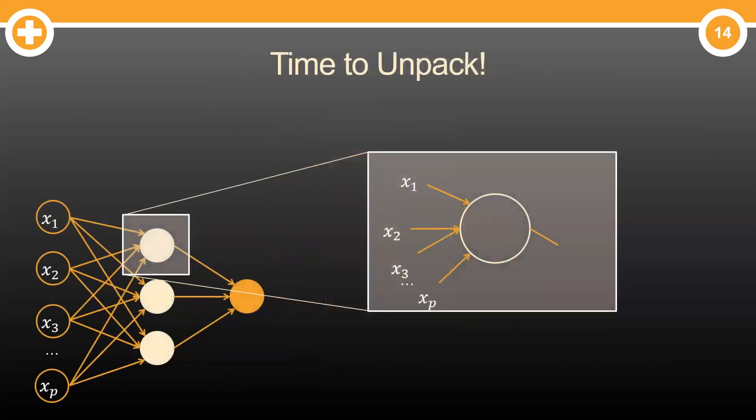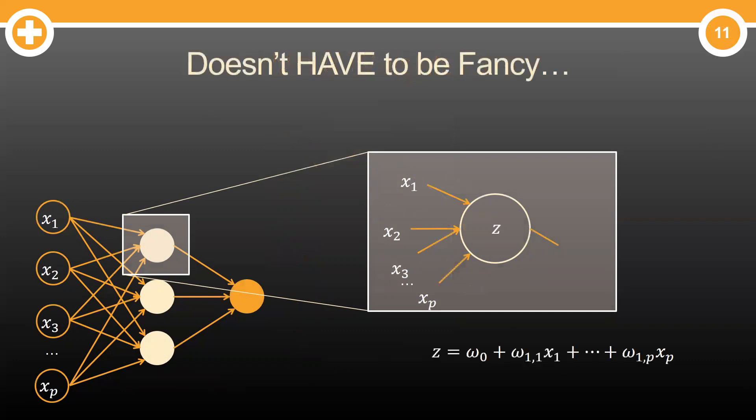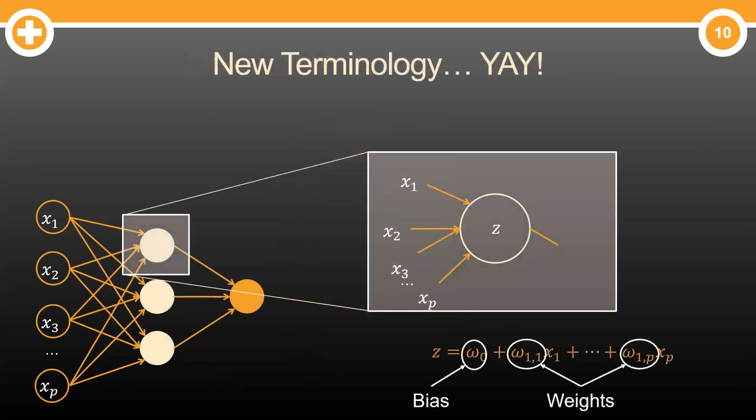Let's break down one of these hidden layer nodes. All of the inputs go into each node. These inputs are weighted as they go into the node. Again, we combine these weights and inputs together. We still have that same linear combination here that we'll just call Z. These weights, the coefficients on the variables, and the bias, the intercept term, are again structured like a linear regression.